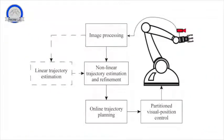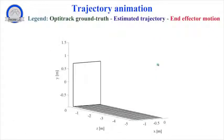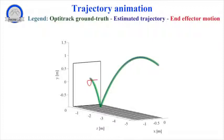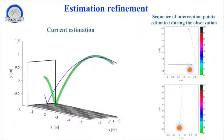A high priority multi-thread programming approach has been employed to improve the stability of the elaboration time and synchronize the visual measurements with the robot motion. In order to provide a ground truth for the proposed estimation algorithm, an opti-track motion capture system composed of 10 cameras has been employed to track the ball during its motion.